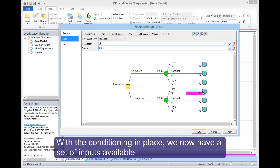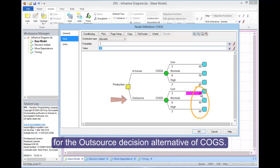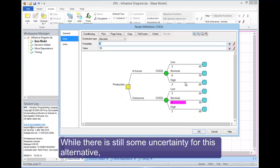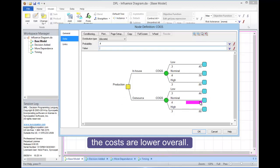With the conditioning in place, we now have a set of inputs available for the outsource decision alternative of COGS. While there is still some uncertainty for this alternative, the costs are lower overall.